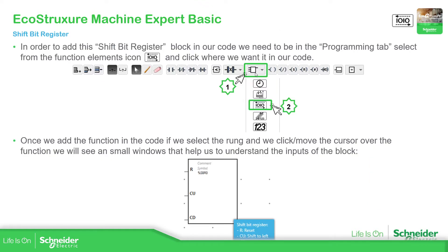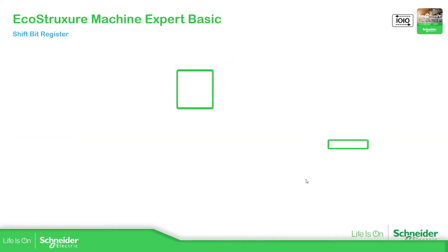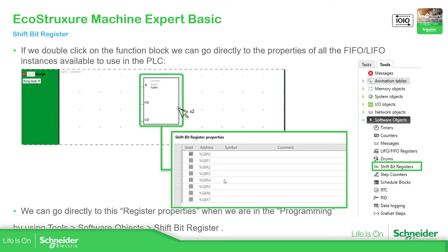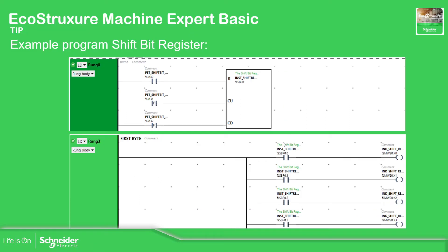To use this Shift-Bit-Register, access the function blocks icon, select the icon, and place it in your program — simple as that. To access its configuration — which doesn't have much — you can change the symbol, link it to the function block, and add comments when you double-click on it. You can also access the complete list via Tools > Software Object Sheet > Bit Register.